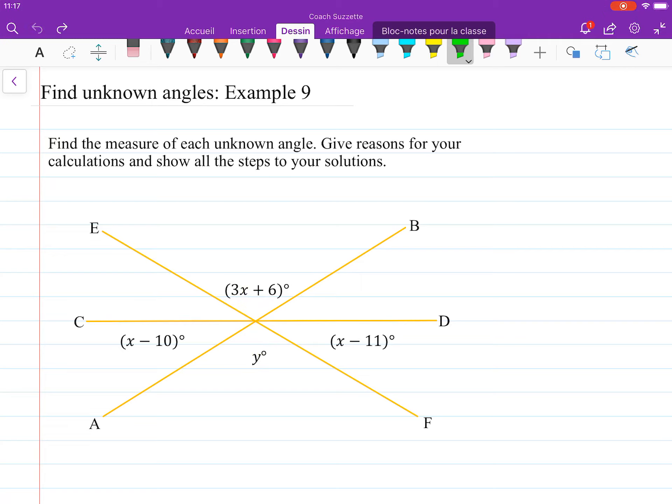So if we have that these are vertical angles, that means we can write x minus 10 degrees here. Same here. We can write x minus 11 degrees there. And this is equal to this.